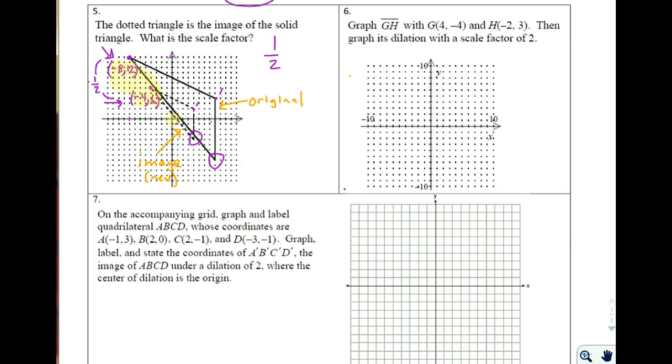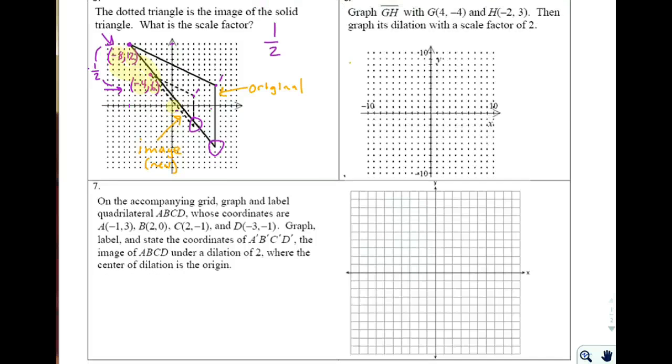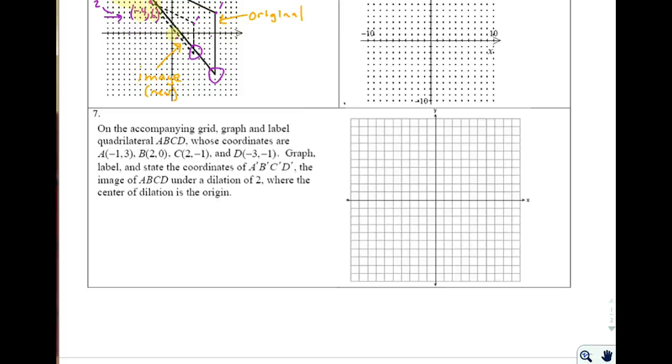On six, you need to create a graph, and then use the given scale factor to graph something new. And on seven, you need to graph this four-sided shape, this quadrilateral. You need to apply a dilation, and it says of two, so that's the scale factor, where the center is the origin. And then you have to label your new one A prime, B prime, C prime, D prime, so draw your new shape. Good luck!